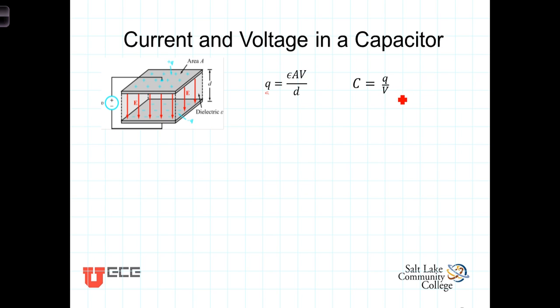Let's take this defining relationship of capacitance that relates charge and voltage, and rewrite it over here, multiplying both sides by V so that we get Q is equal to C times V.